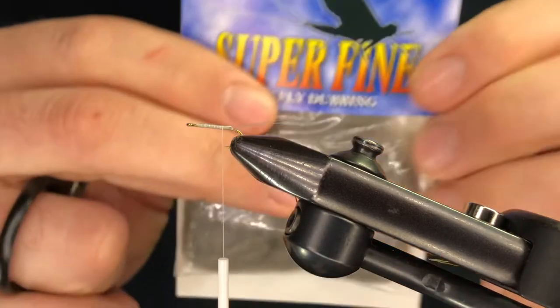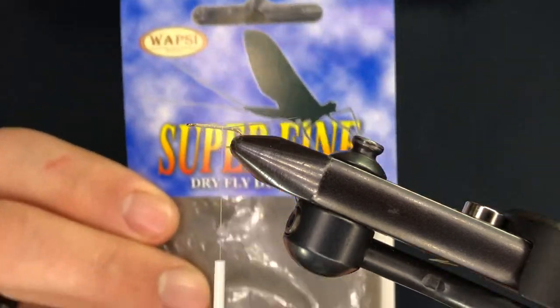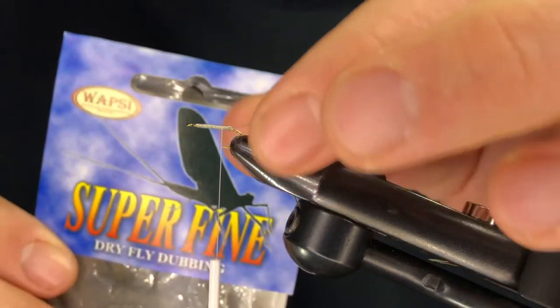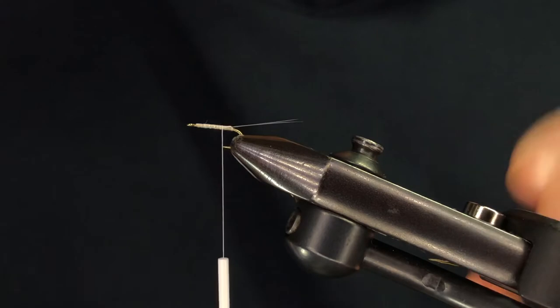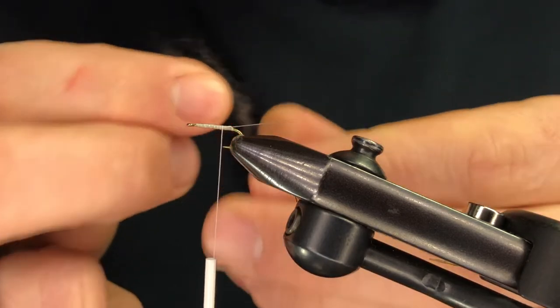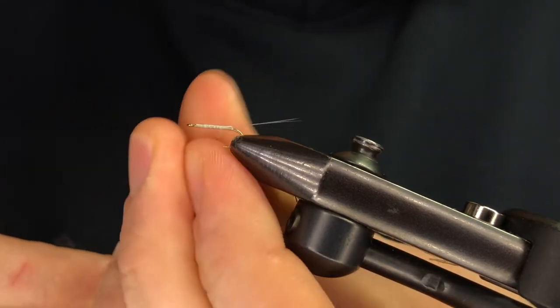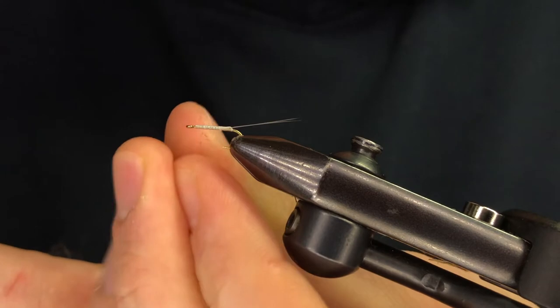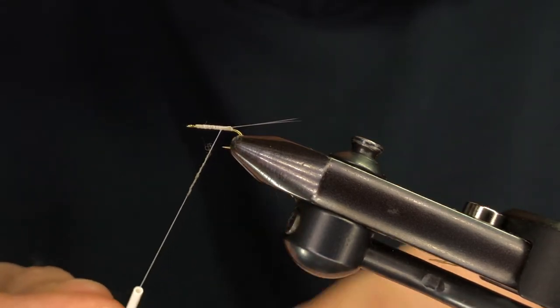And we're going to bring the thread back to about the point of the hook. We're going to use some super fine dubbing. This is Adam's gray. Adam's gray is the most popular color for this fly. And honestly, it works for just about everything. If you think about it a lot, color is the least important thing with your flies. So remember size, shape, or silhouette and color being very last. But you can simply switch this fly to match sulfurs to match little mahogany's just by changing the dubbing color.